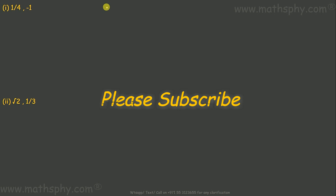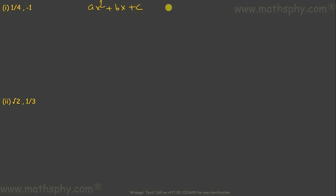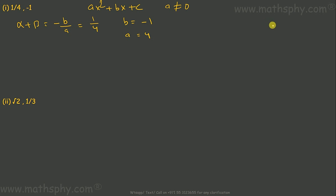The very first question says sum of zeroes is 1/4 and product of zeroes is negative 1. Before doing anything, let's write the equation for a quadratic polynomial: ax² + bx + c, where a is not equal to 0. Sum of zeroes alpha plus beta equals negative b over a equals 1/4, so b would be negative 1 and a would be 4.